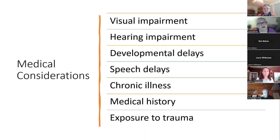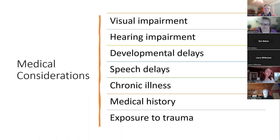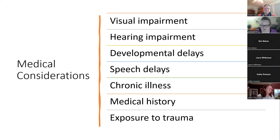Other variables to consider include medical considerations: the child could have a visual or hearing impairment, developmental delays, speech delays, or chronic illness. It's a good idea to talk to parents about the child's medical history. Unfortunately, many families coming to our country have been exposed to trauma in challenging ways, and understanding that piece is a very important part of the process.